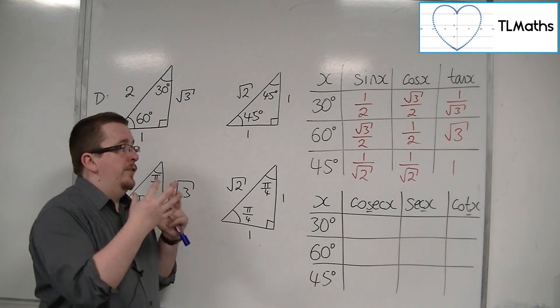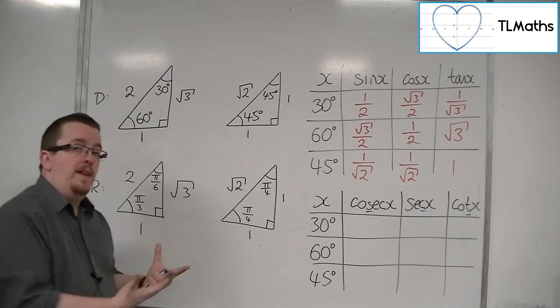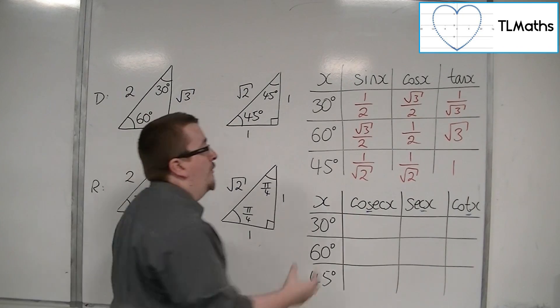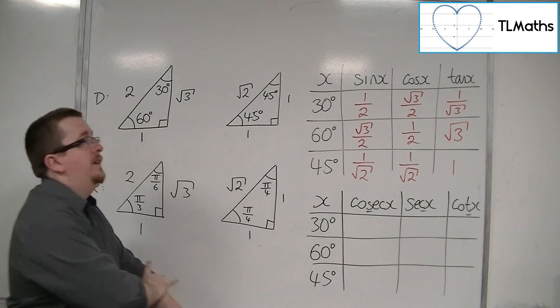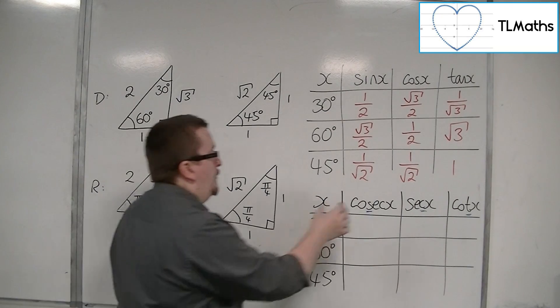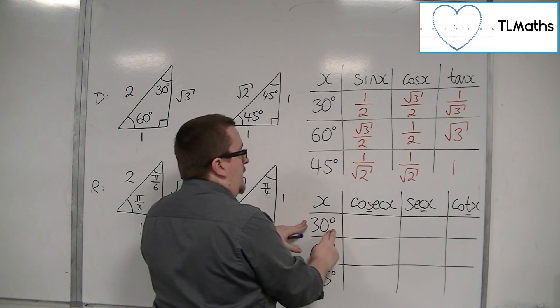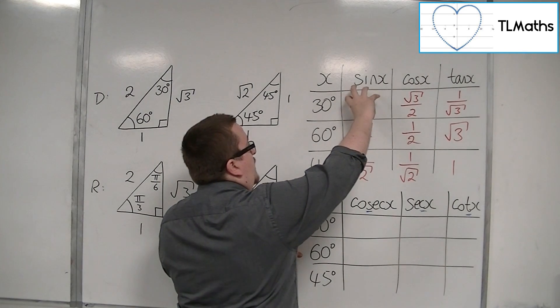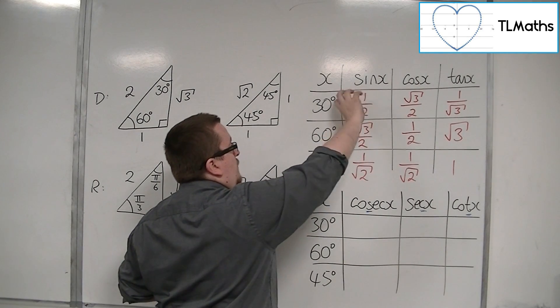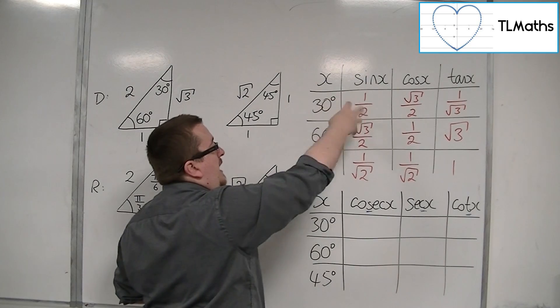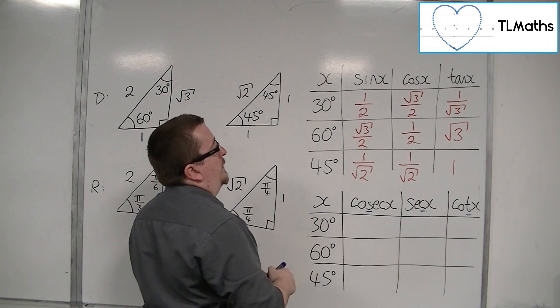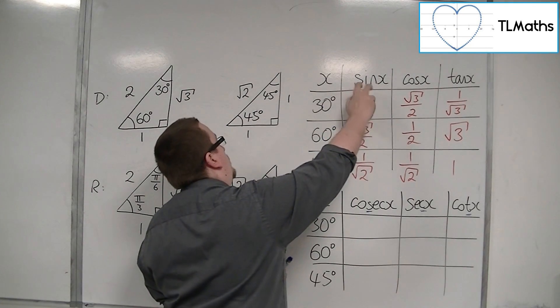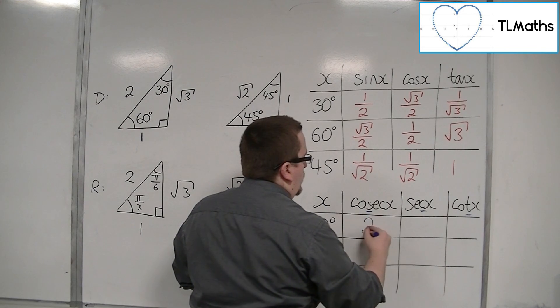So to find exact values for each of these, all I need to do is refer back to the table that we had a few videos ago. So cosec of 30 is 1 over sine of 30, and so each of these will be flipped upside down, and we're just looking for the reciprocal of each of these. So 1 over 2 will become 2 over 1, so that will be equal to 2.